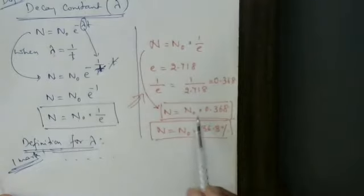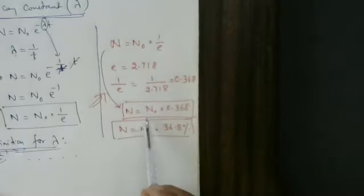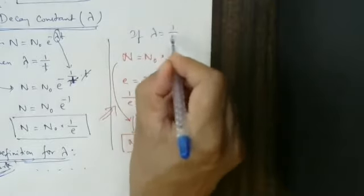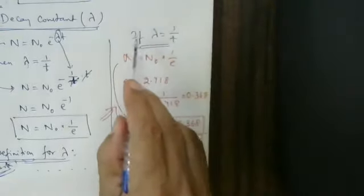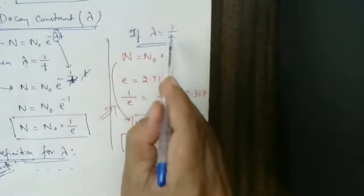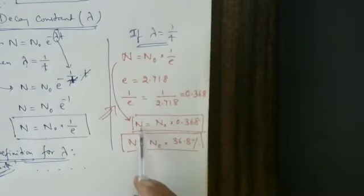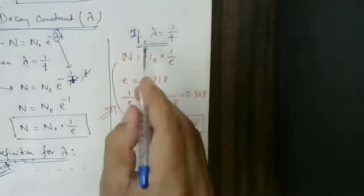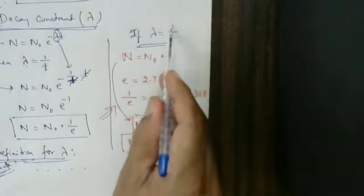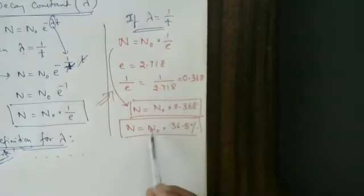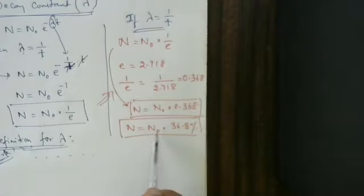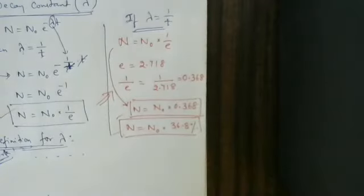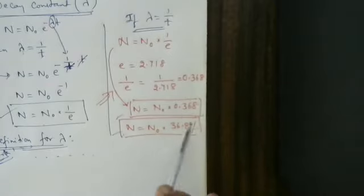For CET or NEET examination, don't forget: decay constant equals the reciprocal of the time during which the number of atoms reduces to 0.368 times the initially present number of atoms. Or equivalently, decay constant equals the reciprocal of the time interval during which the number of atoms reduces to 36.8% of the initially present number of atoms. Either definition is acceptable.